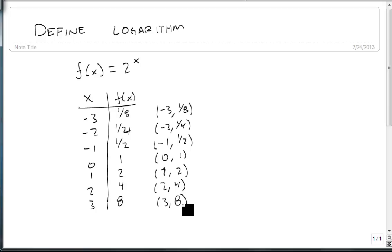And again, remember, to find the inverse, all we need to do is take our list of points and reverse them. So this becomes 1/8, minus 3; 1/4, minus 2; 1/2, minus 1; 1, 0; 2, 1; 4, 2; and 8, 3.